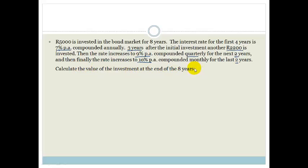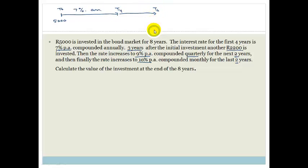Calculate the value of the investment at the end of the eight years. The first thing we're going to do is a timeline. So we've got T0, at which point we invest R5,000. The interest rate for the first four years is 7% per annum compounded annually, so up to T4, the interest rate is 7% compounded annually. Then from T4 to T6, the rate increases to 9% compounded quarterly. And for the last two years, T6 to T8, we have 10% compounded monthly.